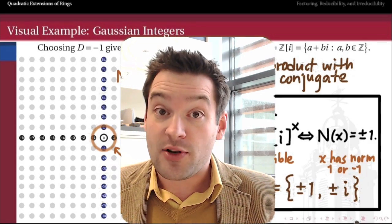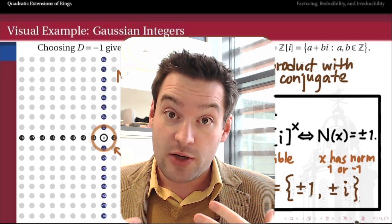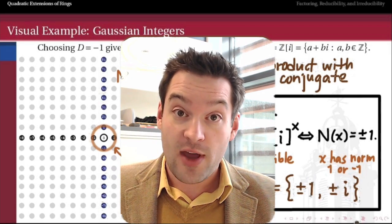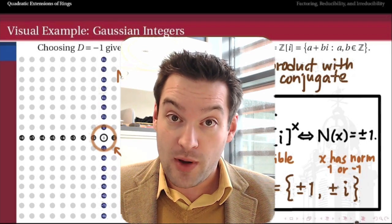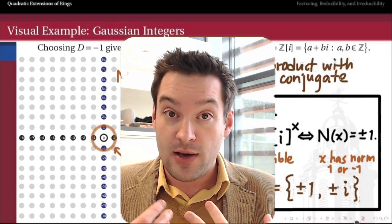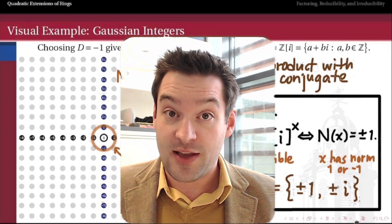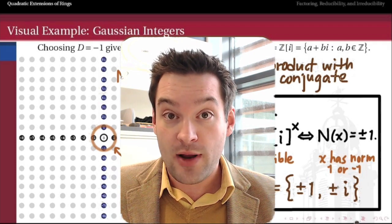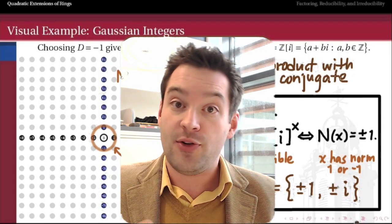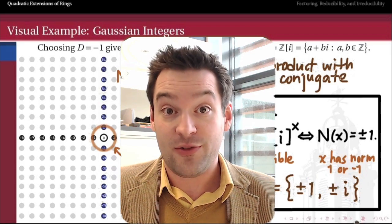This generalizes: for any quadratic extension of the integers, the units are exactly those elements with norm equal to plus or minus 1. The norm is already telling us something deep about the multiplicative properties of this extension ring. In the next video we'll look more generally at quadratic extension fields and what the norm reveals about whether a number in that ring or field is factorable.